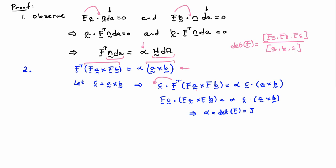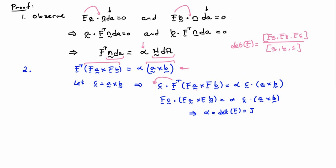So alpha equals det(F), which we usually call J. Plugging this back in gives F-transpose little n times D little a equals J times big N times D capital A. All I need to do to get to Nanson's formula is move the F-transpose to the other side by multiplying through by F-inverse-transpose, which gives little n times D little a equals J F-inverse-transpose big N D capital A. And that's what we were trying to prove.